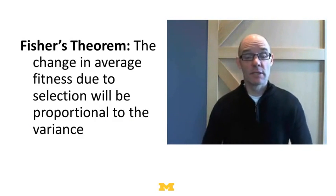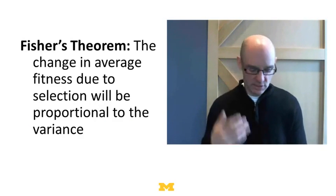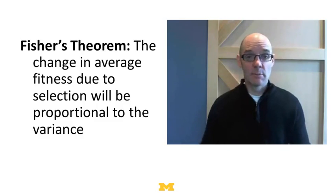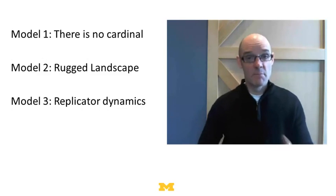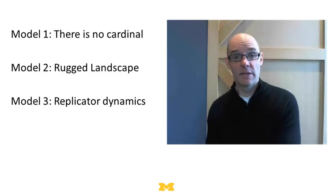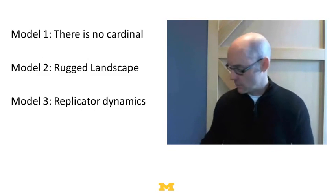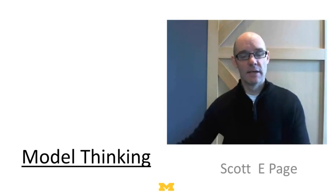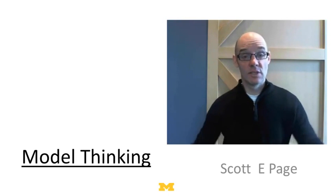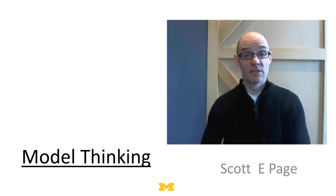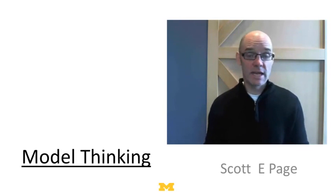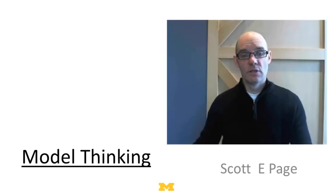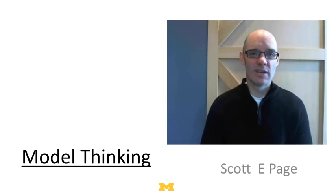We got this result by combining three models: there is no cardinal, there's a rugged landscape, and replicator dynamics. This is one of the powers of being a many-model thinker — you can combine models to ask much deeper scientific questions. But there's a rub we'll come to in the next lecture: we just concluded that more variation is better, but this runs counter to something we learned earlier — that you want to reduce variation because of six sigma. In the last lecture of this unit, I want to contrast these two models, to figure out which logic applies in which situation.